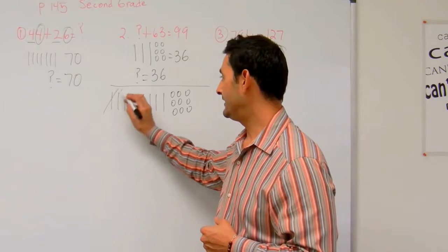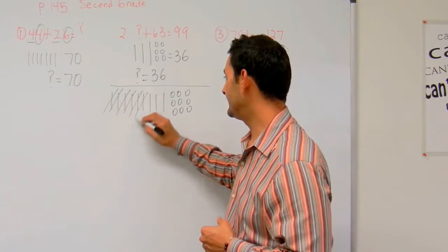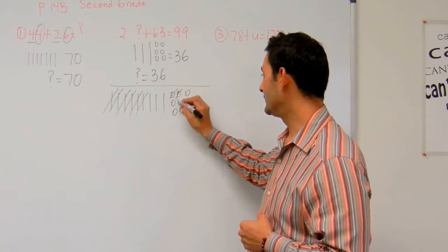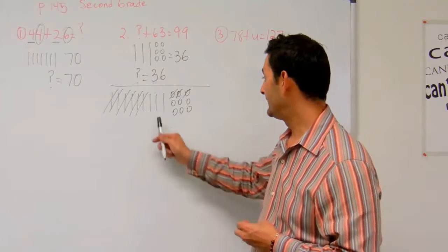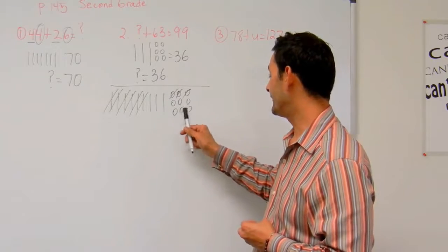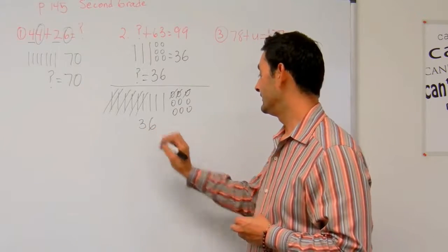Now I'm going to take away 63. Let's take away 6 tens: 10, 20, 30, 40, 50, 60. And I'm going to take away 3 ones: 1, 2, 3. What do I have left? 10, 20, 30, 31, 32, 33, 34, 35, 36.